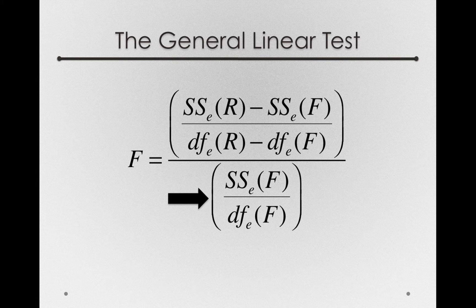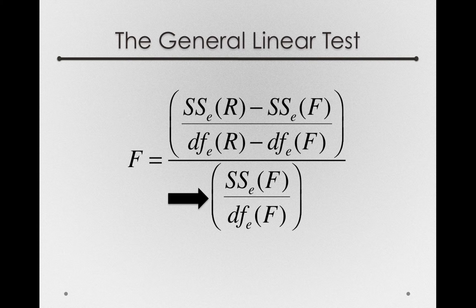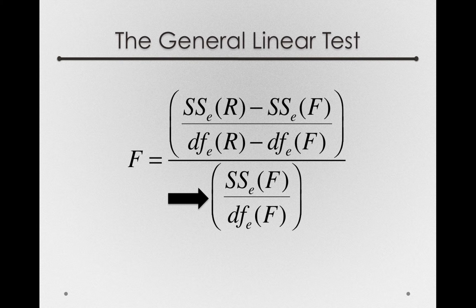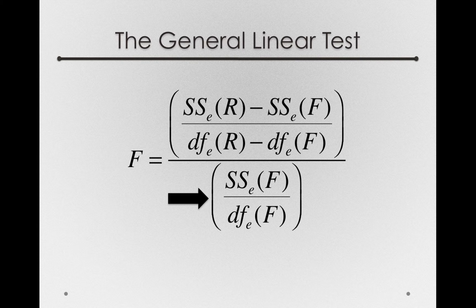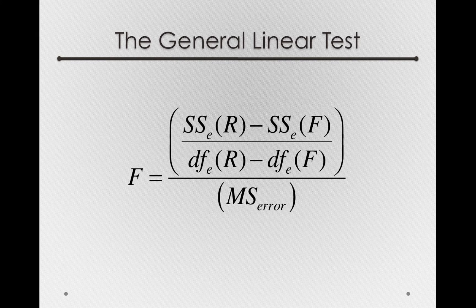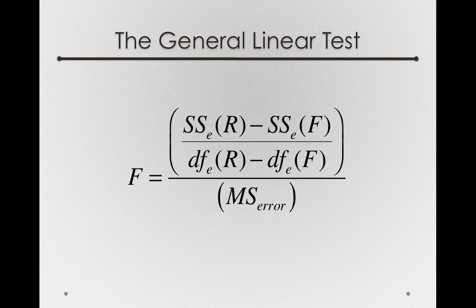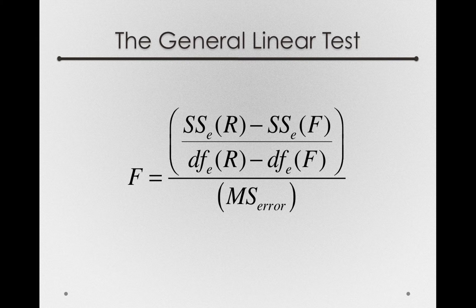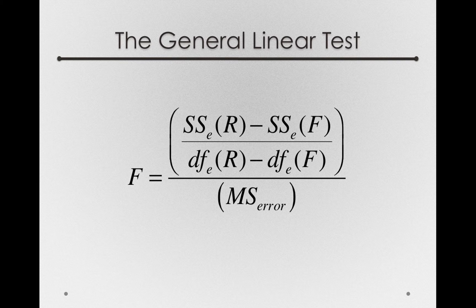Let's tackle the denominator. In this case, we have the sums of squares error from the full model divided by the degrees of freedom error for the full model. Well, we know this to be the mean square for error. That's the same mean square for error we developed before. So the denominator of this test right now has the same denominator as the analysis of variance test.